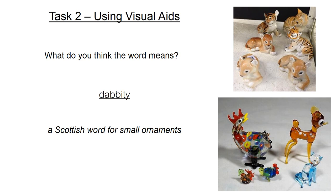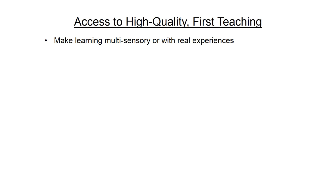As important as visuals are, it is also important to use visuals wisely, as too many can become a distraction and cause visual overload. In addition to the points mentioned earlier, learning should be as multi-sensory as possible. Use concrete resources and ensure that the student understands fully before moving to the abstract. Teaching through real experiences helps to give purpose to the learning and make it more memorable.